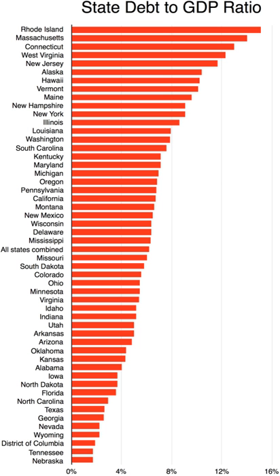The executive branch of every state is headed by an elected governor. Most states have a plural executive, in which several key members of the executive branch are directly elected by the people and serve alongside the governor. These include the offices of lieutenant governor — often on a joint ticket with the governor — an attorney general, secretary of state, auditors or comptrollers or controllers, treasurer, commissioner of agriculture, commissioner or superintendent of education, and commissioner of insurance.